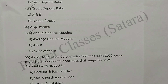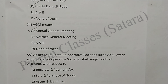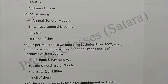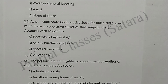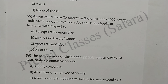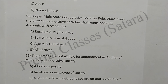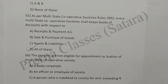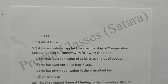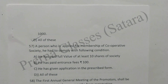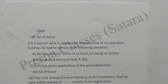As per Multi-State Cooperative Societies Rules 2002, every multi-state cooperative society shall keep books of accounts with respect to receipt and payment account, sale or purchase of goods, assets, liabilities, and all of these. Option D is correct. Persons not eligible for appointment as auditor of a multi-state cooperative society: a body corporate, an officer or employee of the society, a person who is indebted to the society for an amount exceeding Rs. 1,000, and all of these. Option D is correct.